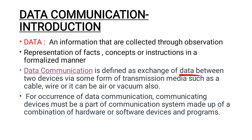Data communication is defined as the exchange of data between two devices via some form of transmission media such as cable, wire, air, or vacuum. For data communication to occur, communicating devices must be part of a communication system, which is made up of a combination of hardware, software devices, and programs.